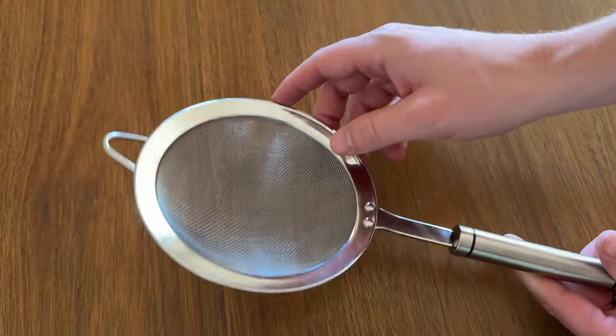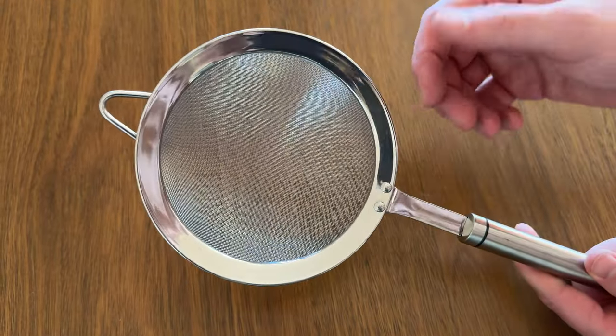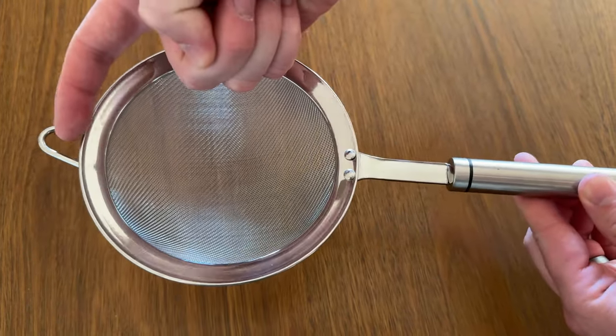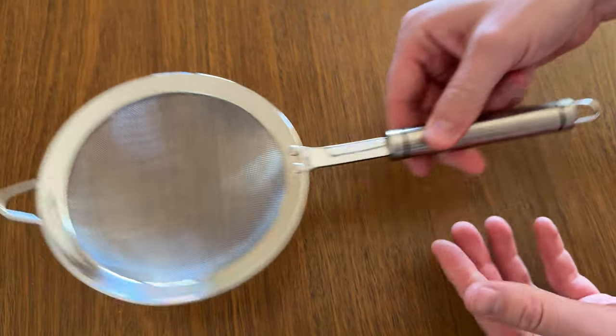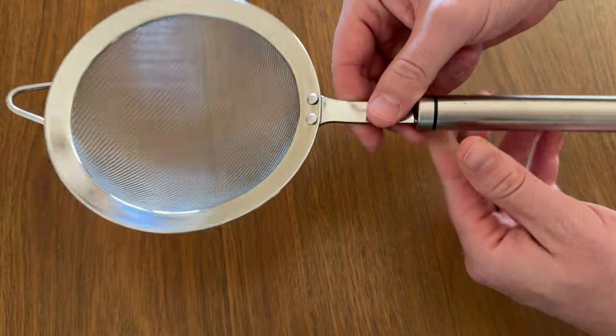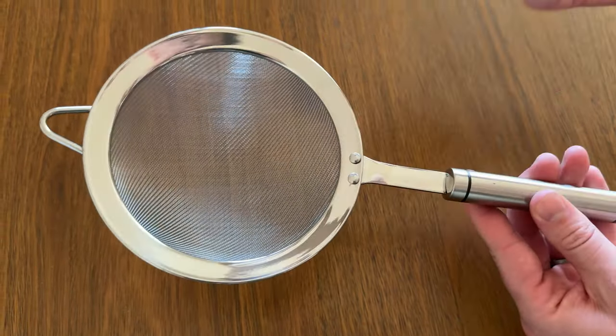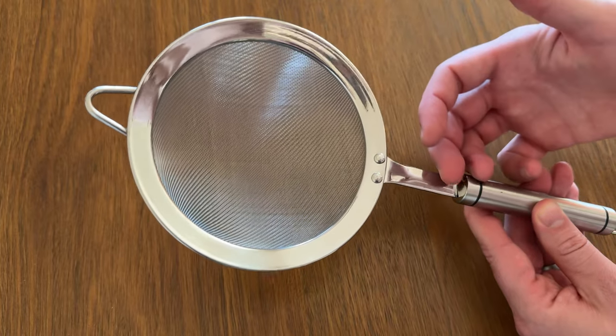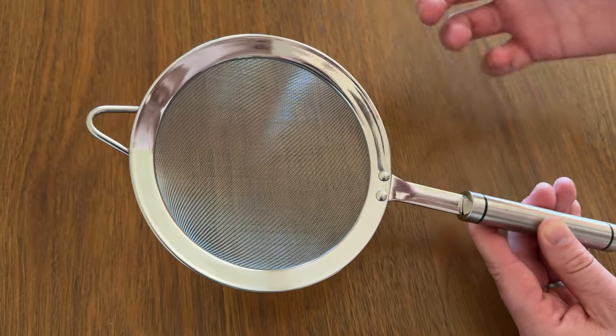You could pile it really high because it's curved with curved lips, and then you can drain it on your sink because it has these little tabs here. So depending on the size of the sink you use, you can just set it right on top and let it drain out, which is really handy. You could go prep your cereal while it's draining out all the water.